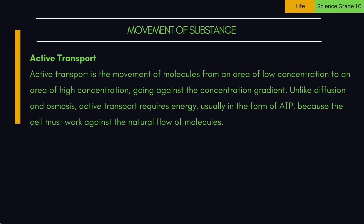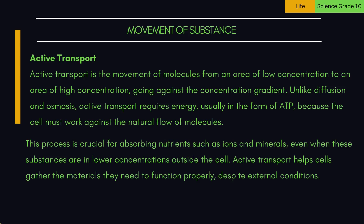3. Active transport — the movement of molecules from an area of low concentration to an area of high concentration, going against the concentration gradient. Unlike diffusion and osmosis, active transport requires energy, usually in the form of ATP, because the cell must work against the natural flow of molecules. This process is crucial for absorbing nutrients such as ions and minerals, even when these substances are in lower concentrations outside the cell, helping cells gather the materials they need to function properly despite external conditions.